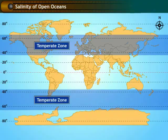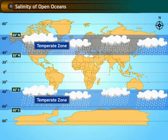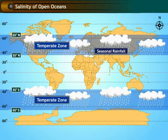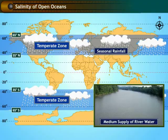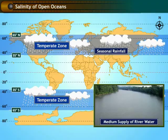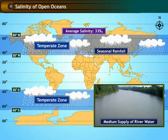The temperate region is located between 35 degrees and 65 degrees north and south of the equator and receives low sunlight. The rainfall in this region is seasonal with a medium supply of fresh river water to the oceans. Hence, the salinity is less in the temperate region, with an average of 33 parts per thousand.